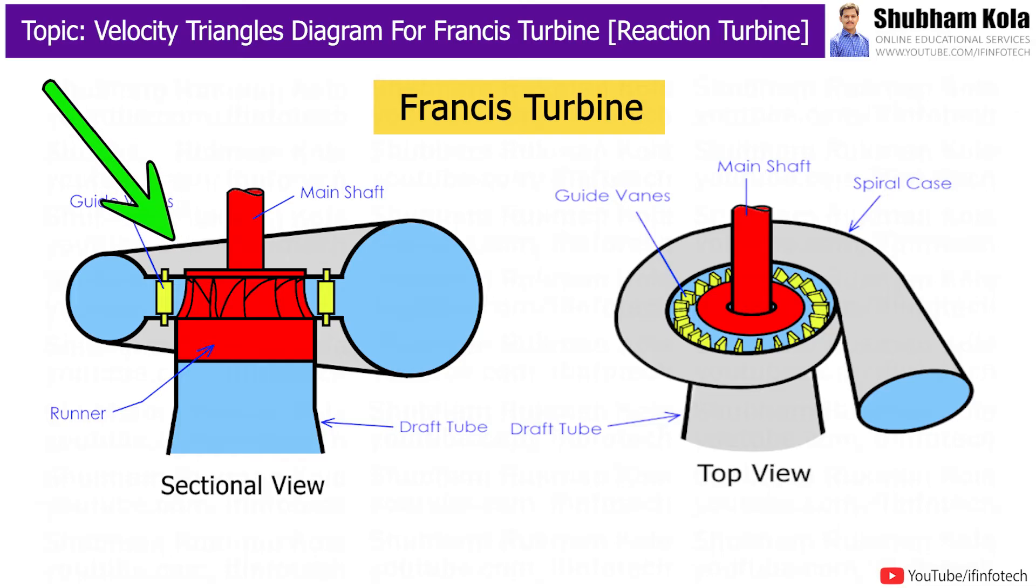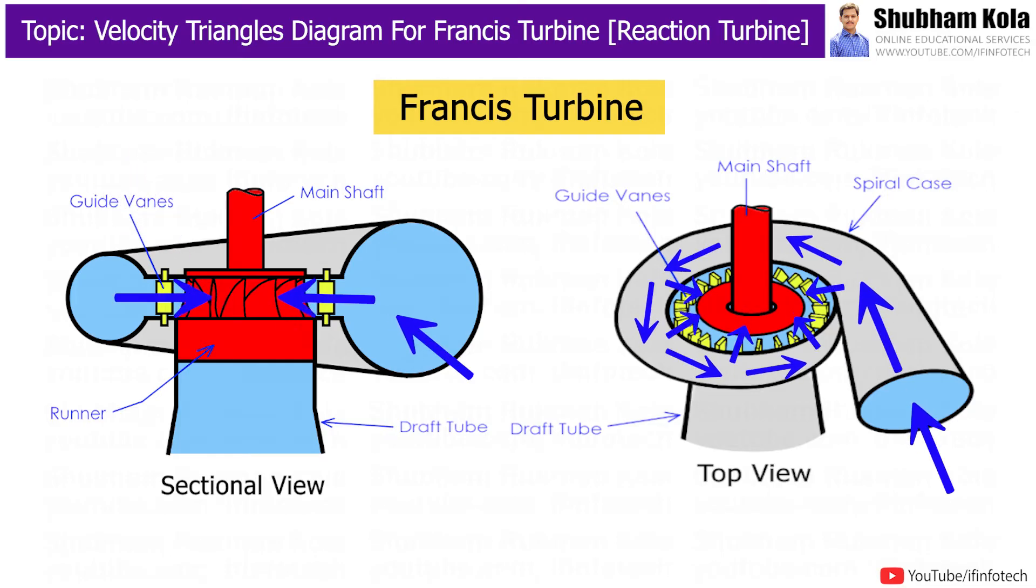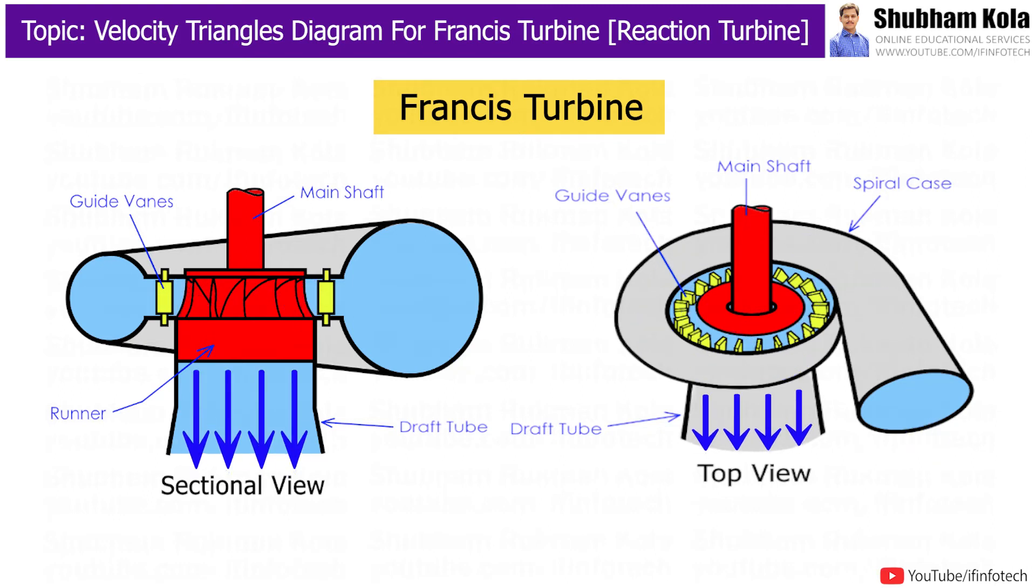The Francis turbine is an inward flow reaction turbine in which water enters the turbine in radial direction at outer periphery of runner and leaves in axial direction.